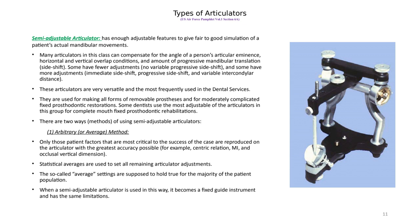Some dentists use the most adjustable articulators in this group for complete mouth rehabilitation. There are two ways of using semi-adjustable articulators: the arbitrary or average method, where only factors critical to the case are reproduced with greatest accuracy — such as centric occlusion, maximum intercuspation, and occlusal vertical dimension — while statistical averages are used to set the remaining adjustments. When used this way, a semi-adjustable articulator becomes a fixed guide instrument with some limitations.